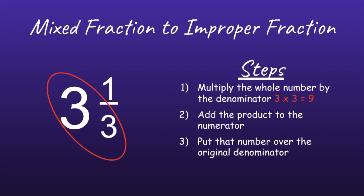Step 2: add the product to the numerator. 9 plus 1 is equal to 10. And Step 3 is to put that number over the original denominator. So 3 and 1 third, as an improper fraction, would be 10 over 3.